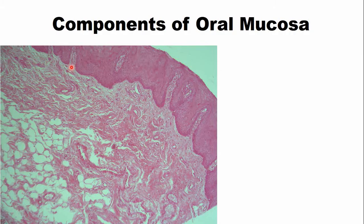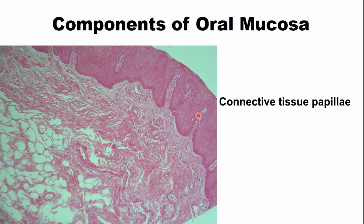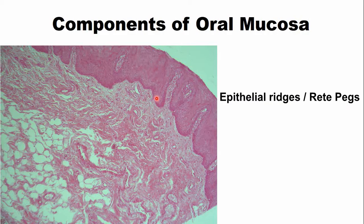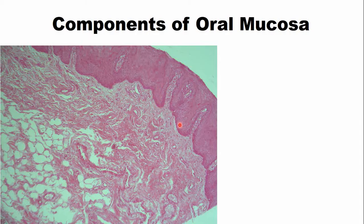These projections of connective tissue into the epithelium are known as the connective tissue papillae. Similarly, there are projections of the epithelium into the connective tissue, and these are known as epithelial ridges, also called rete pegs.